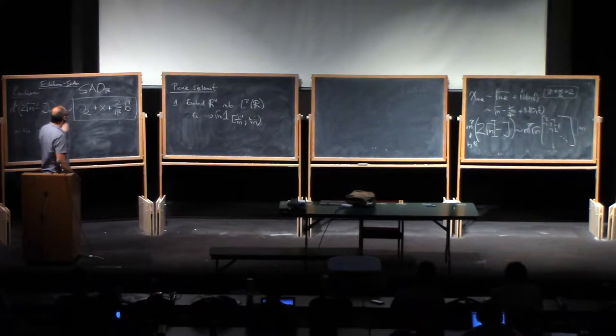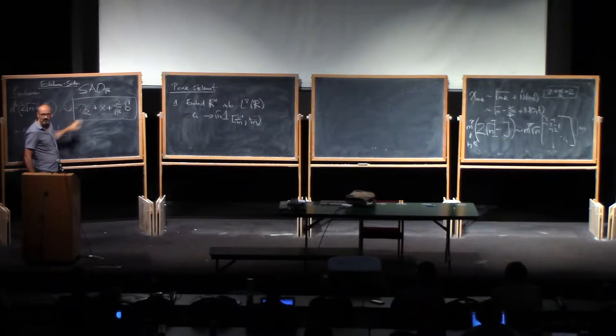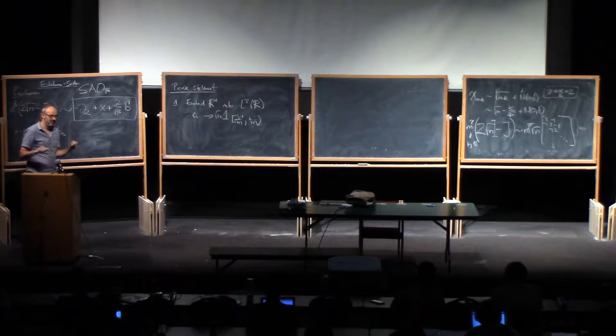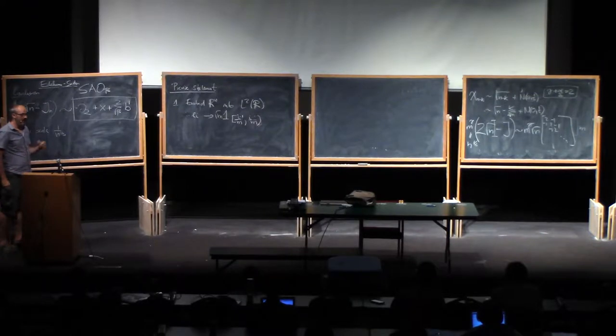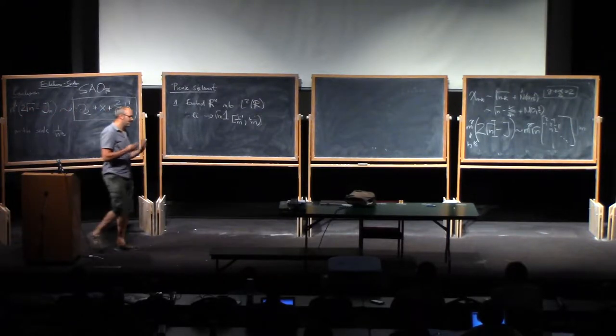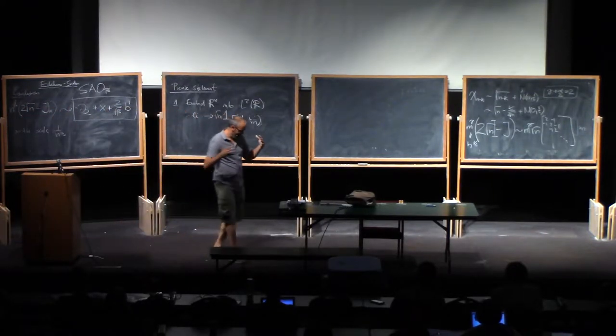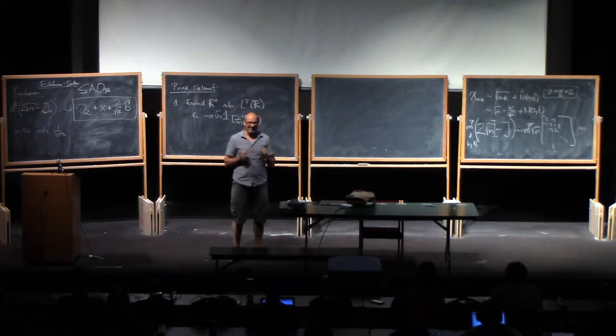It turns out that the resolvent of this, or the inverse of this, is a compact operator, so actually it's defined on the whole L2 of R. The inverse of that you can also define as a compact operator, and the statement is that those things you can couple in a way that their difference in norm is going to zero. So that's the precise statement.